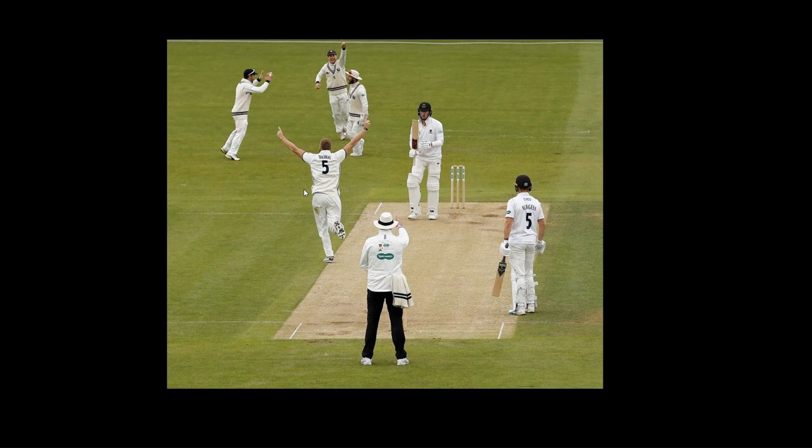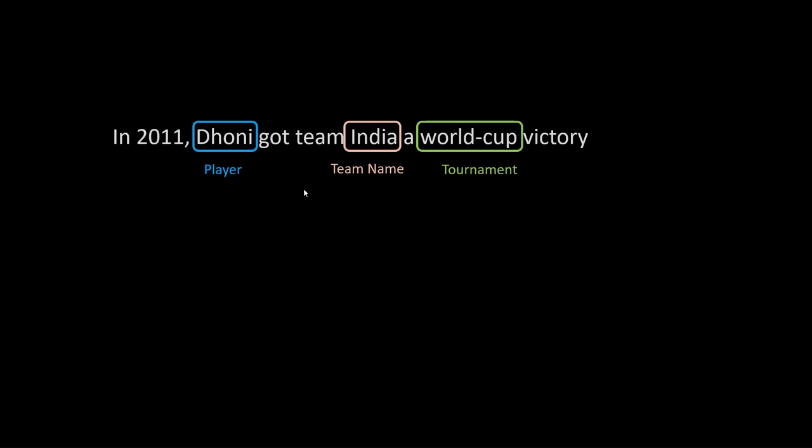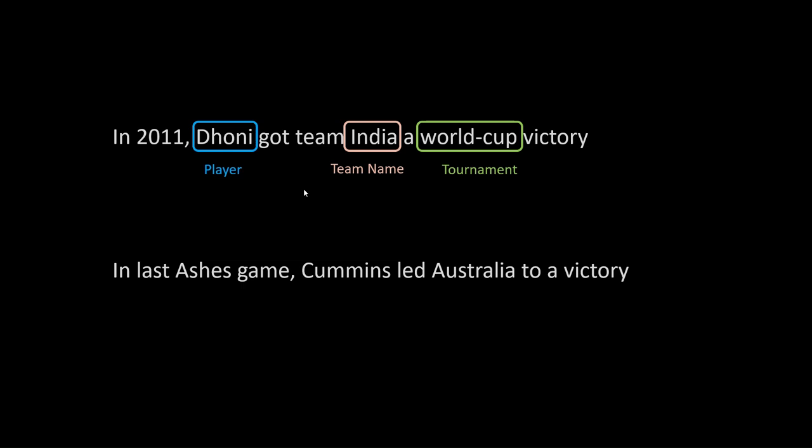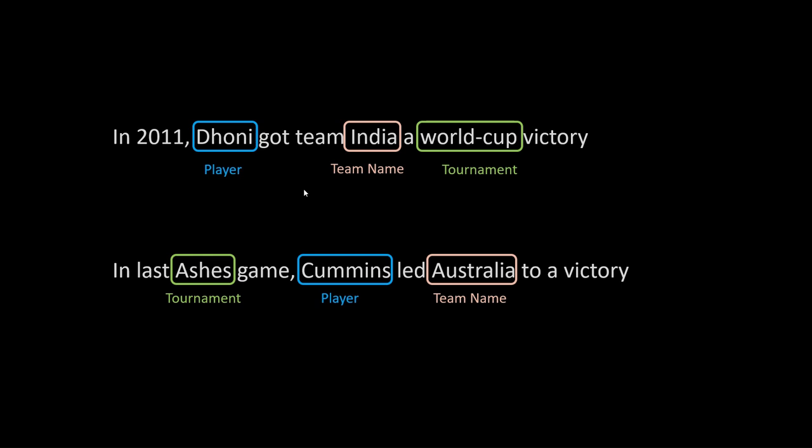Let's see another example. Imagine we are building an NLP model for a cricket game where your task is recognizing entities in a given sentence. In the sentence 'In 2011 Dhoni got Team India a World Cup victory,' your task is recognizing that Dhoni is a player, India is the team, and World Cup is the tournament. Similarly, in a second sentence, Ashes is the tournament, Cummins is the player, and Australia is the team. This is called entity recognition — an application of NLP.